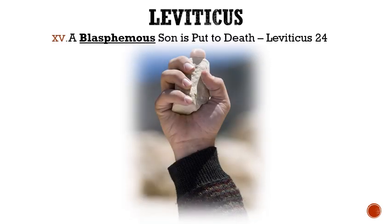Roman numeral 15: In Leviticus 24, we find out that a blasphemous son is put to death. His mother was an Israelite, but his father was an Egyptian. In the process of a fight with another man, he blasphemed the Lord's name and cursed. So they brought him to Moses, and the Lord told him to take the man outside of the camp and have him stoned to death by the people.